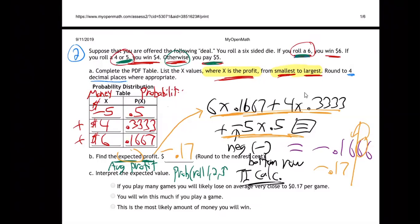So it should be: the $4 was 0.3333 and the $6 was 0.1667. The answer won't change though — it doesn't matter what order for the multiplying. It just matters in the table. They're just being particular about their table. It doesn't really change any answers — they just want it in that order.